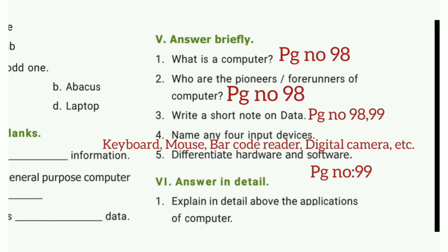Fourth question: Name any four input devices. The answer is keyboard, mouse, barcode reader, digital camera, etc. Fifth question: Differentiate hardware and software.